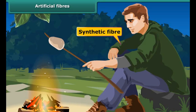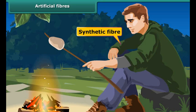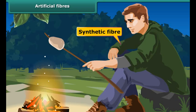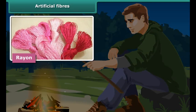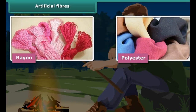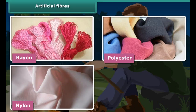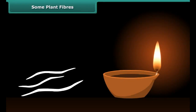You might have heard that we should not wear synthetic clothes while working near fire. What are synthetic clothes made of? These clothes have yarns of man-made artificial fibers. These fibers catch fire very easily. Some examples of synthetic fibers are rayon, polyester, nylon, and terrylene.